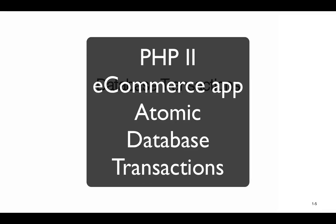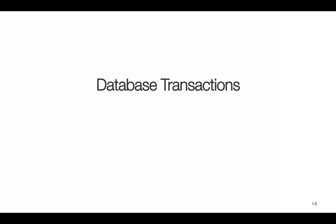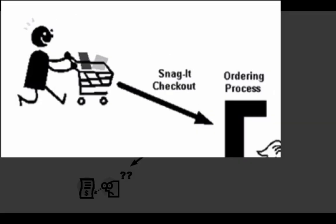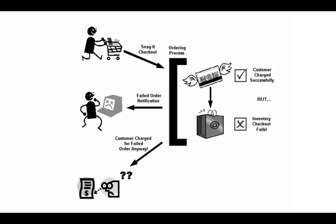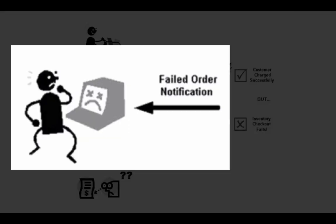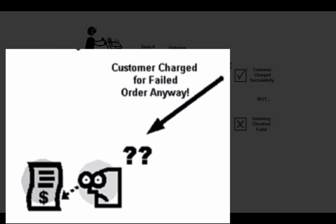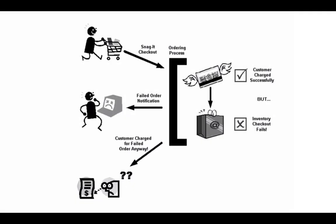Let's talk about database transactions. We're about to do some coding in a checkout process where we have multiple steps that need to be completed as one unit. Think of this store's problem: a customer comes along and does a checkout, enters the order process, and gets a failure notice on his computer screen, but then gets a bill in the mail because he apparently got an order. You're going to have some angry customers if you have a halfway completed checkout process.